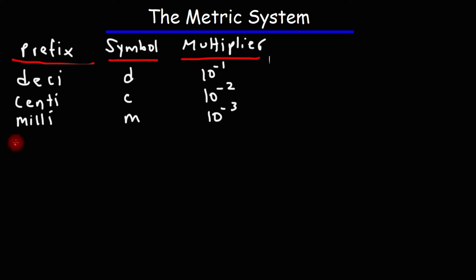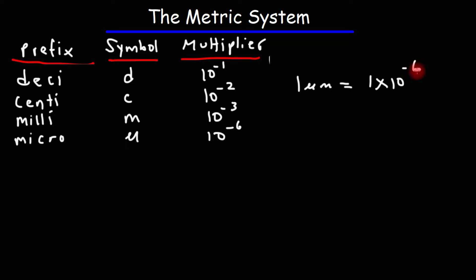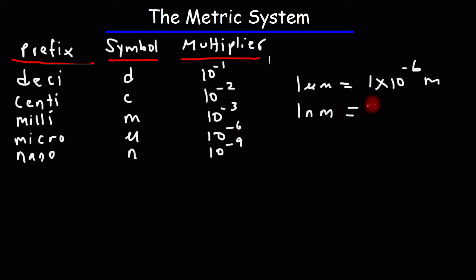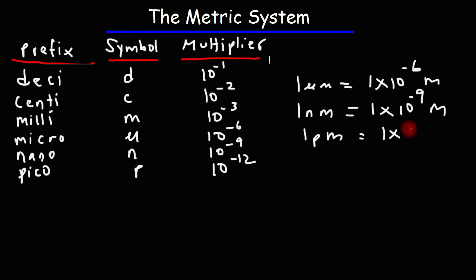After milli, the next one is micro. Micro is 10 to the minus 6, so 1 micrometer is 1 times 10 to the negative 6 meters. After micro, we have nano, lowercase n. Nano is 10 to the minus 9. Think of it this way: 10 to the positive 9 was giga, which represents 1 billion — so nano, 10 to the negative 9, is a billionth. Mega was 10 to the 6, a million; micro, 10 to the minus 6, is a millionth. So 1 nanometer is 1 times 10 to the negative 9 meters. After nano, it's pico, lowercase p, 10 to the negative 12. 1 picometer is 1 times 10 to the negative 12 meters.